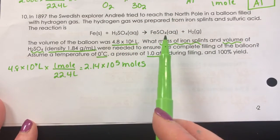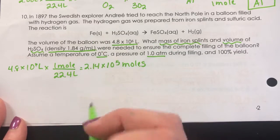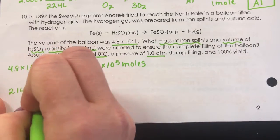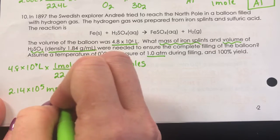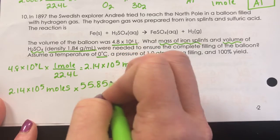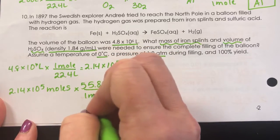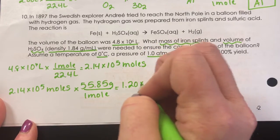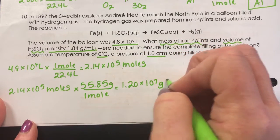Everything reacts in a one-to-one ratio. So for the iron, we just need to convert the moles of iron to grams by multiplying by the molar mass of iron, which is 55.85. So we need 1.2 times 10 to the 7th grams of iron.